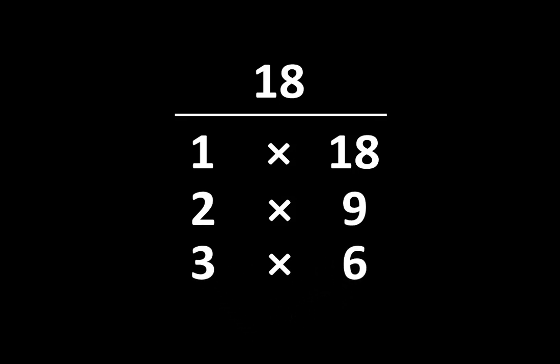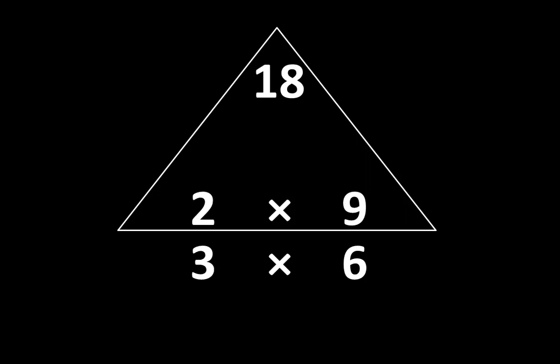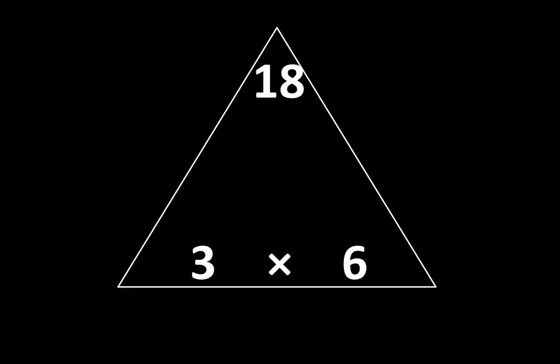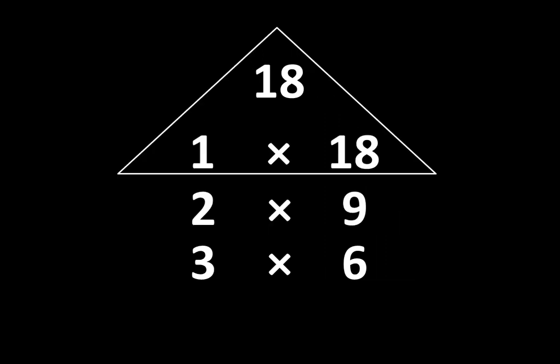Since all of these pairs are factors of eighteen, we know they are all related to eighteen. One times eighteen is equal to eighteen, and at the same time two times nine is equal to eighteen, and at the same time three times six is also equal to eighteen. We can also say that eighteen is equal to three times six, and two times nine, and one times eighteen.